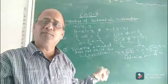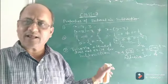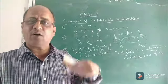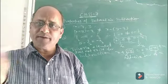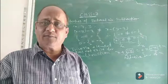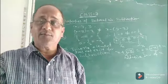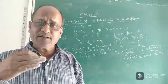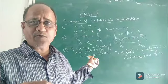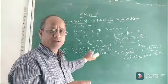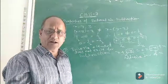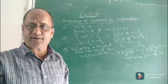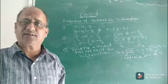With this we have completed all the properties of rational number subtraction. In the next class we will discuss how rational numbers are multiplied and divided, their properties, how to verify those properties, reciprocal of a rational number, and how to find the reciprocal. There are many things to be discussed in this chapter, and we will go through them step by step. I hope you are all understanding. If you have any difficulty or doubt, you can ask me. Thank you.